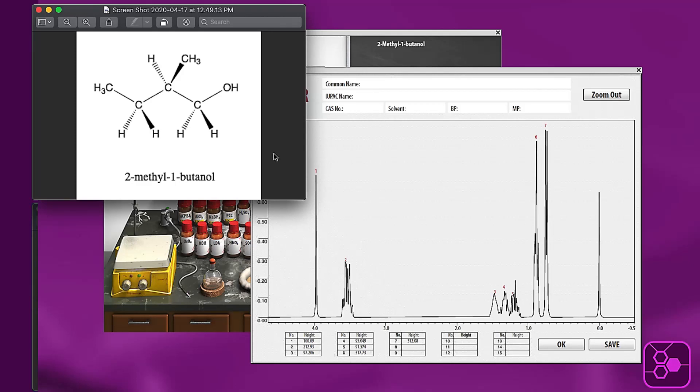Now I know that this hydroxyl proton is going to be deshielded and that it's going to be a singlet, and so I can assign that to peak number one here. That's a singlet, it's the most deshielded peak of all the peaks. So I would go ahead and assign that proton to peak number one.